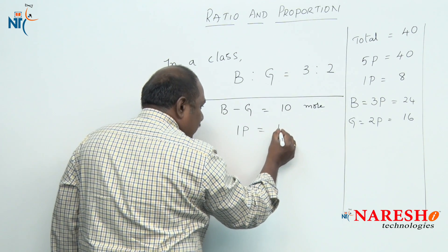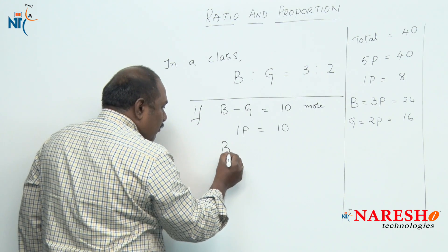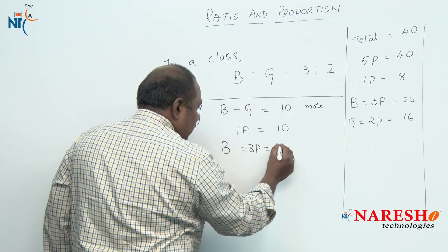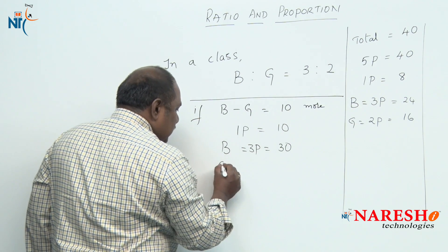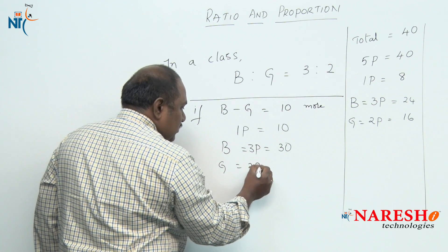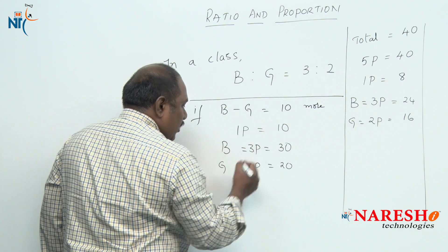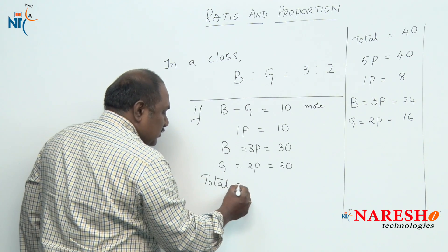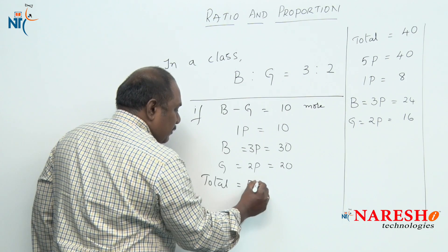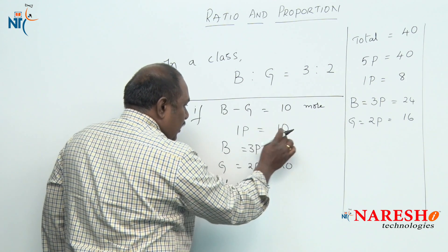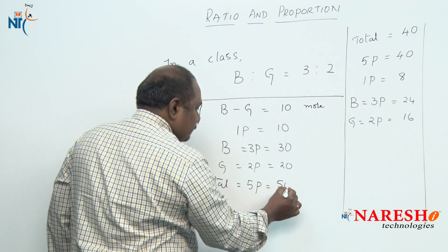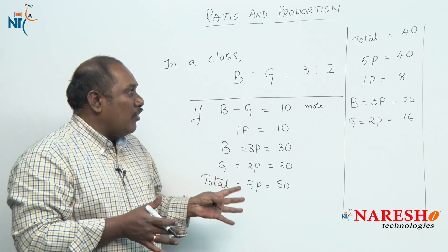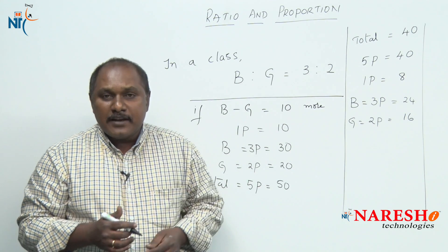That 1 part is equal to 10. Then the number of boys in the class is 3 parts, which is 30, and the number of girls is 2 parts, which is 20. If I want to find the total strength directly, that is 5 parts, and since 1 part is 10, the total is 50. This is how we find the actual values of the terms in the ratio.